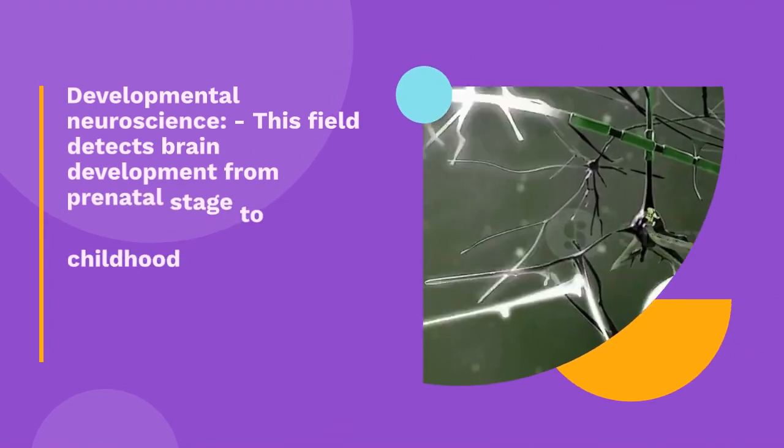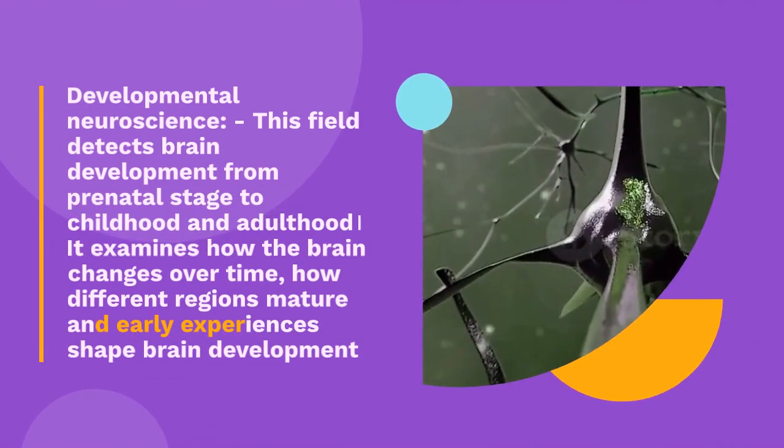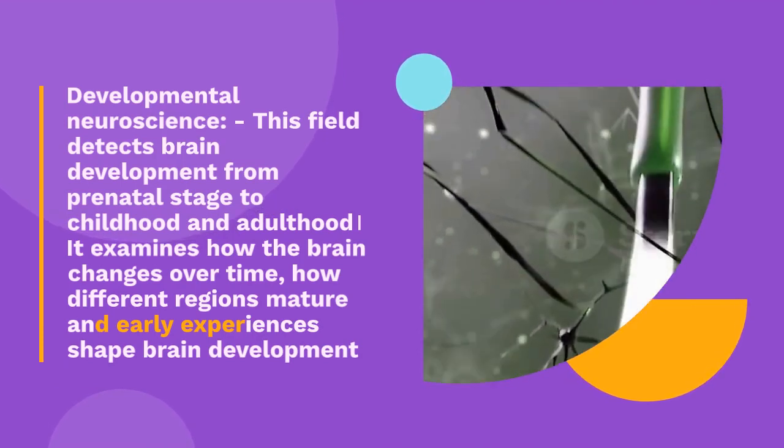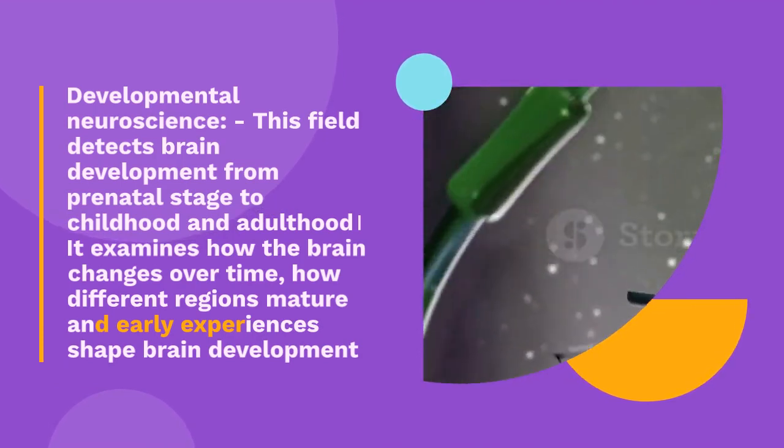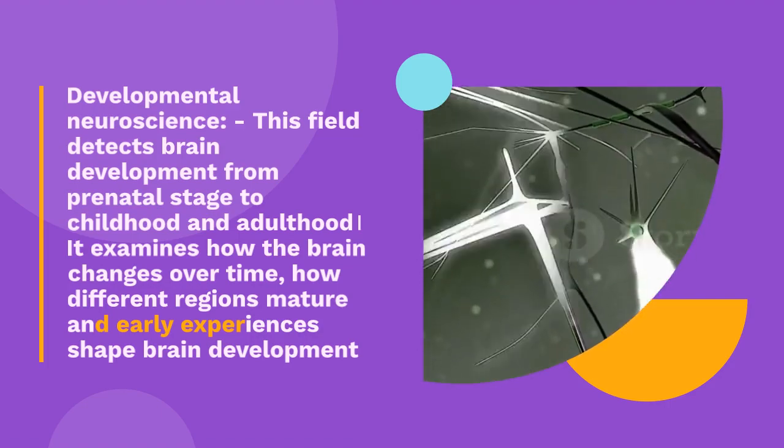Developmental Neuroscience: this field tracks brain development from prenatal stage to childhood and adulthood. It examines how the brain changes over time, how different regions mature and how early experiences shape brain development.